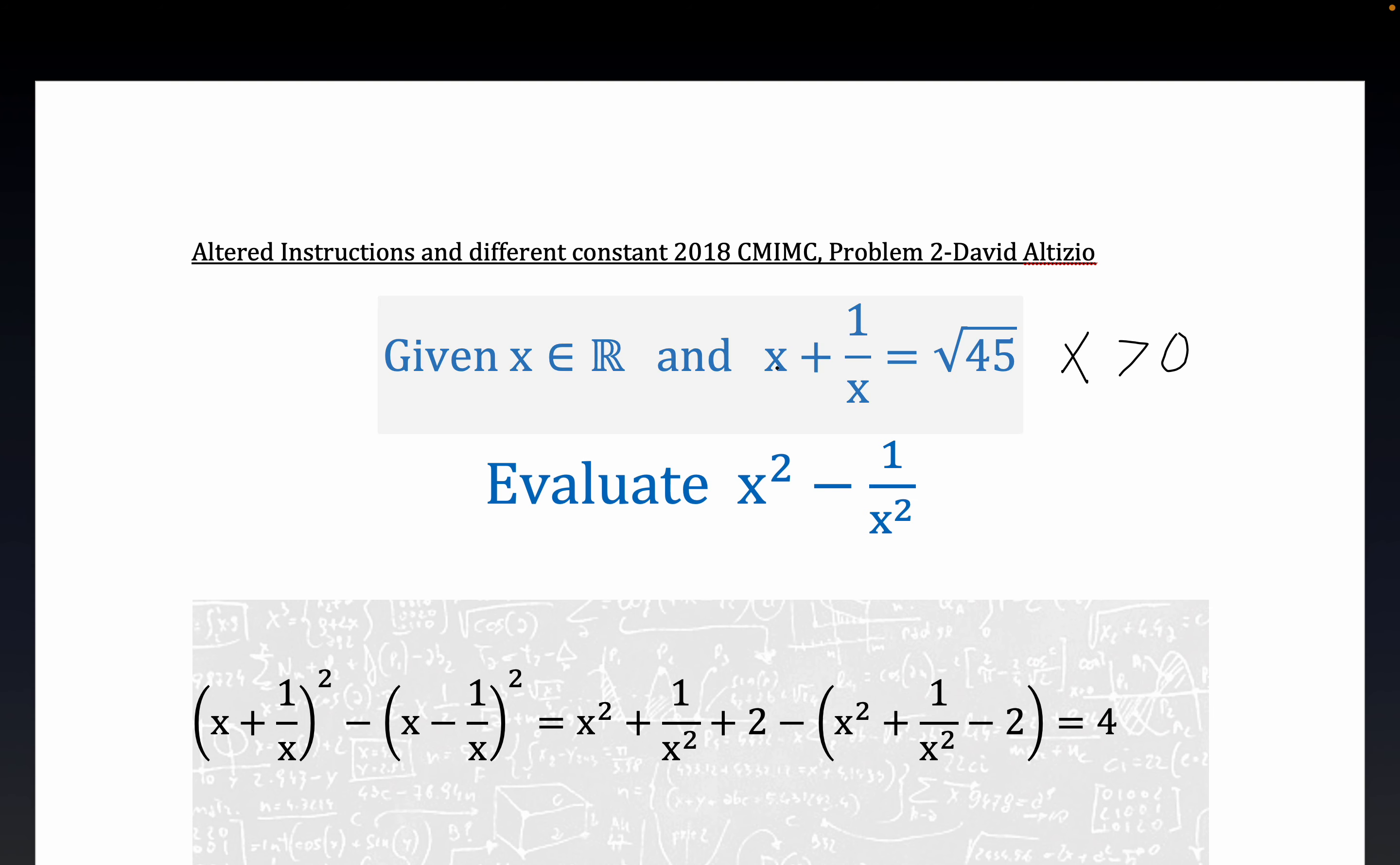But anyway, you can think of this as a quadratic if you multiply through by x and there's two positive solutions, I believe, although I may be kind of stretching a little bit there. Now we're supposed to evaluate x squared minus 1 over x squared. Given this information, we're looking for a real value to x here.